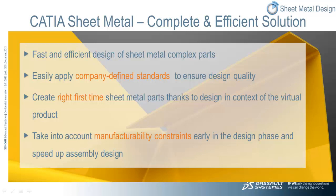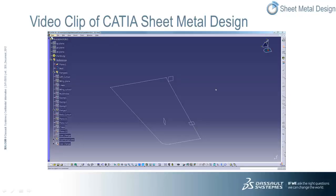It delivers specific functionality to facilitate collaboration and improve performance on complex parts. In a moment, we'll see a short demonstration highlighting some of the key capabilities within the CATIA V5 sheet metal design product. You'll see that CATIA Sheet Metal Design's feature-based approach uses industry-specific terminology for sheet metal workbenches and features such as walls, flanges, cutouts, stamps, extrusions, bends, etc. This allows sheet metal specialists to design sheet metal parts using a language they understand in creating feature-based sheet metal designs.